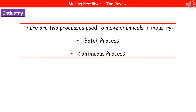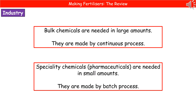When making chemicals in industry, we have a choice between two processes: a batch process or a continuous process. Fertilizers are an example of a bulk chemical — something needed in large amounts. To make bulk chemicals in large quantities, we use the continuous process. Whereas for smaller quantities of chemicals, particularly pharmaceuticals, which are speciality chemicals, we use the batch process.